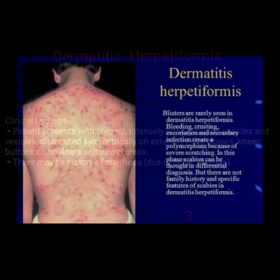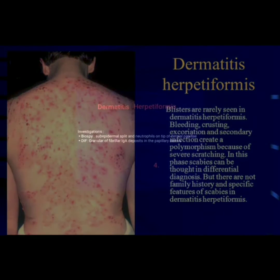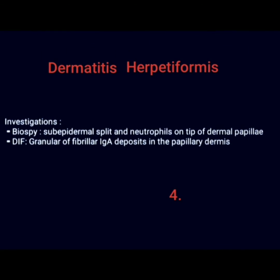This image shows dermatitis herpetiformis, where blisters are rarely seen. Bleeding, crusting, excoriation, and secondary infection create a polymorphic appearance. Due to severe crusting, scabies is a differential diagnosis, but its specific features are absent in dermatitis herpetiformis.